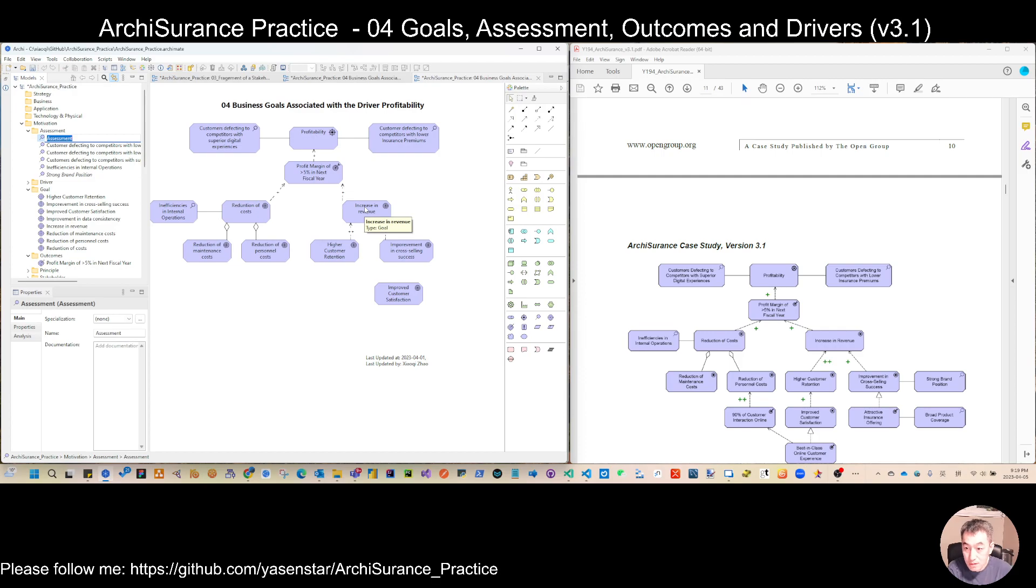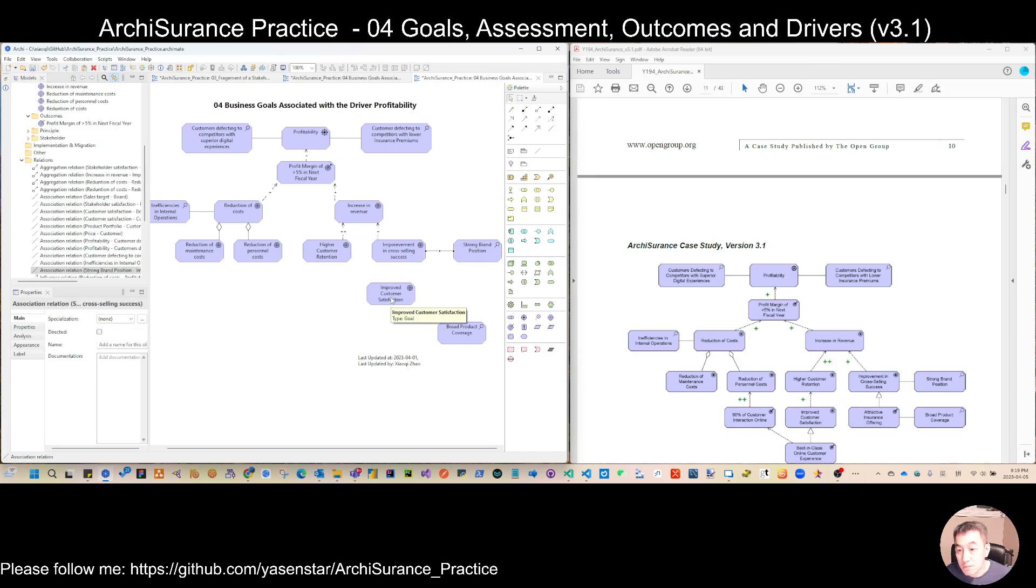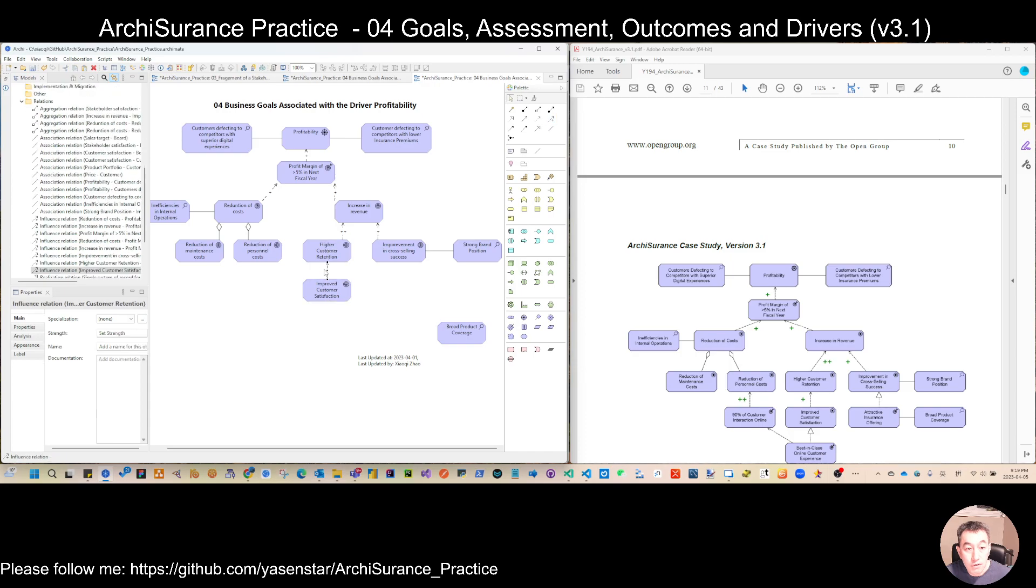And again, this one we have one more assessment. So you can see here you can freely add position. And let's add another one. Assessment is broad product coverage, extract to use. So here the brand position is an assessment to this improvement in cross selling success. And then we have to improve customer satisfaction. Here we don't like the left part that uses aggregation because aggregation looks like it's part of reduction of cost. But here we have some other things to influence it, not aggregate.